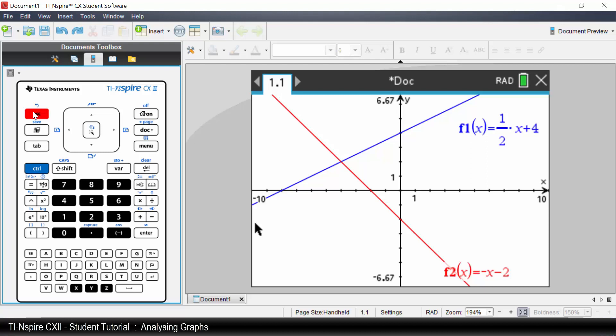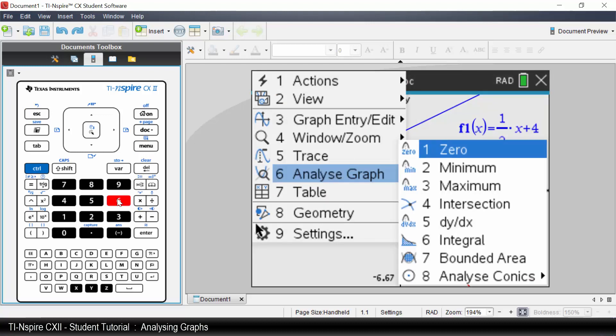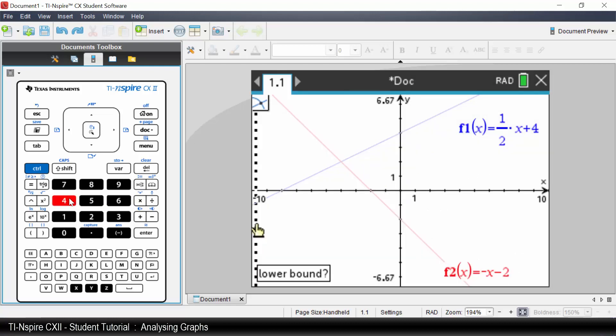Method 2. Press menu. Select Analyze Graph. Select Intersection. As it looks like x is negative 4, enter a number less than negative 4. Negative 5. Press Enter. Enter a number greater than negative 4. Negative 3. And press Enter.